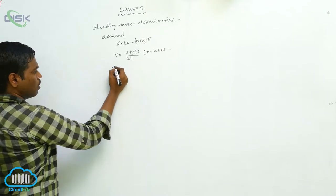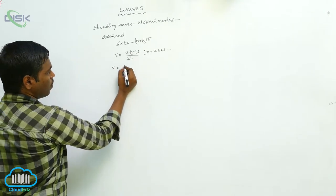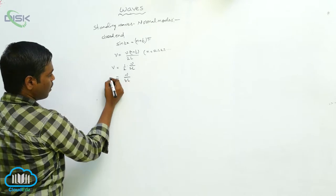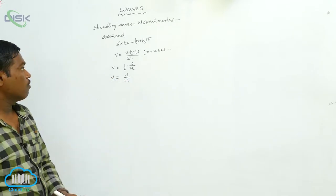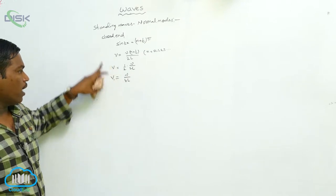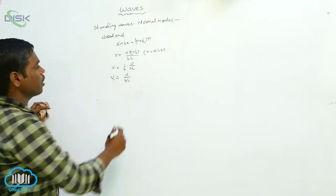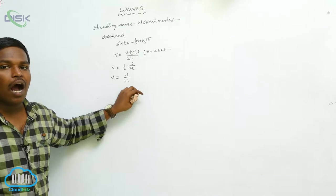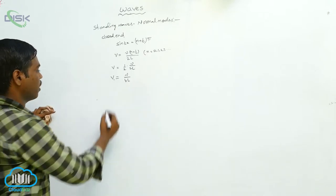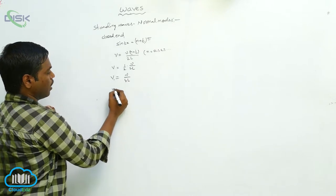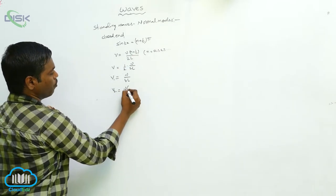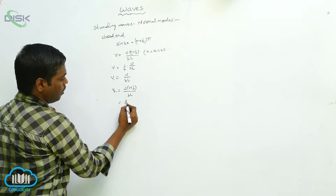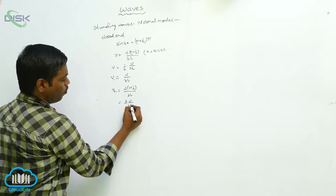If we write n equals 0, then v equals nu divided by 4L — this is the fundamental frequency of the standing wave for the closed end. If we write n equals 1, then v₂ equals nu times (1 + 1/2) divided by 2L, that is 3 times nu divided by 4L.